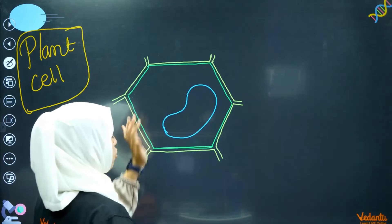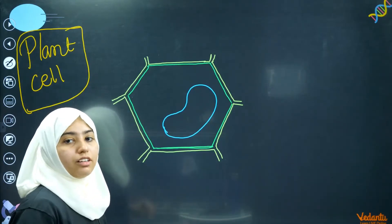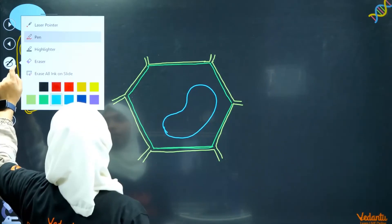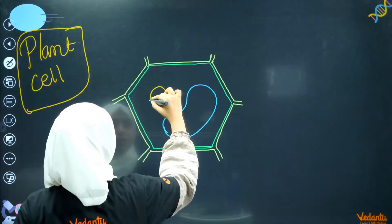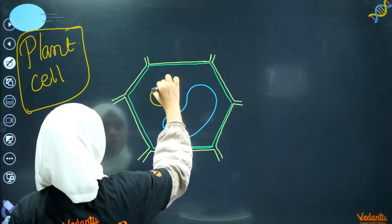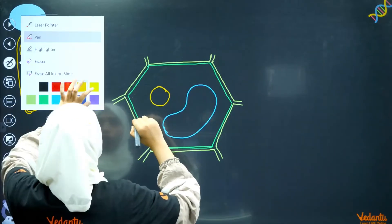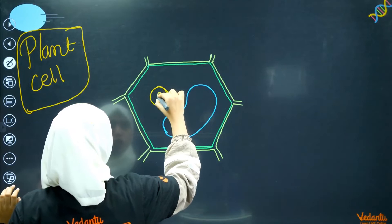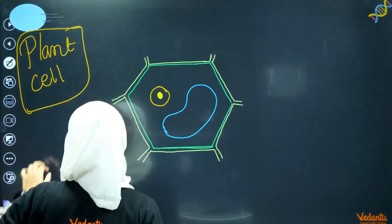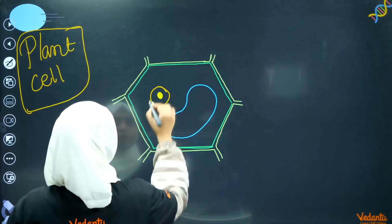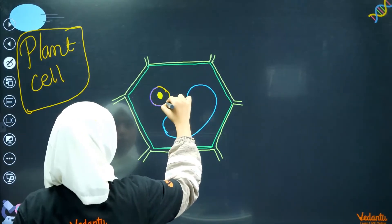Most of the plant cell vacuole is large and covers a lot of space. We will draw the nucleus next. The nucleus is inside. And inside the nucleus, there is the nucleolus. There is also a nuclear membrane around the nucleus.